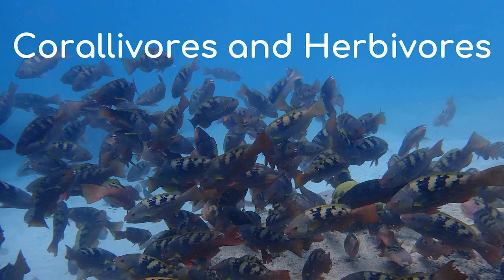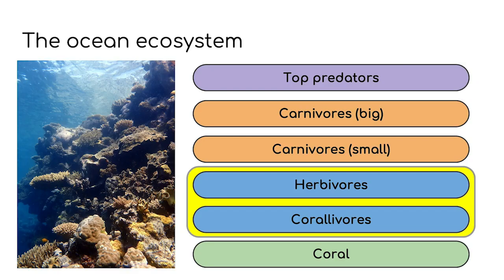So let's get started. Today's session we're going to be talking about corallivores and herbivores. Corallivores and herbivores eat the coral and algae that we've just been learning about. You can see them there in the ocean ecosystem circled in yellow.